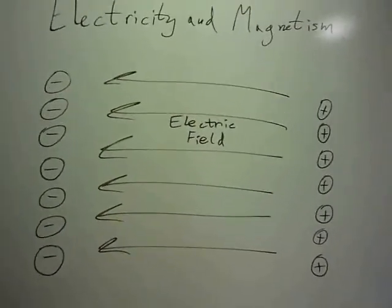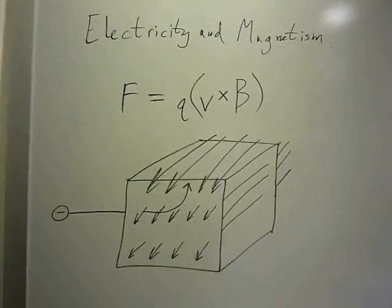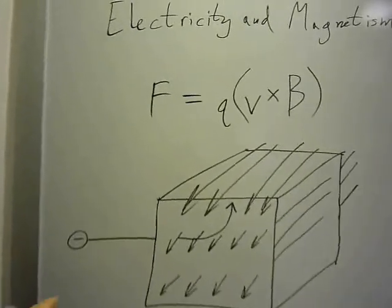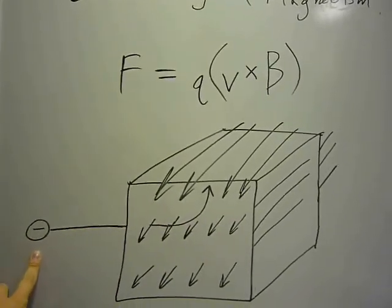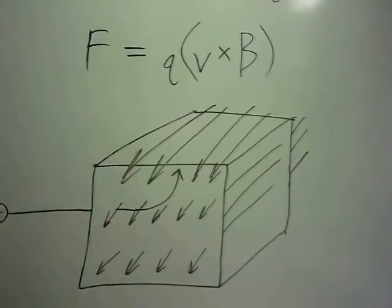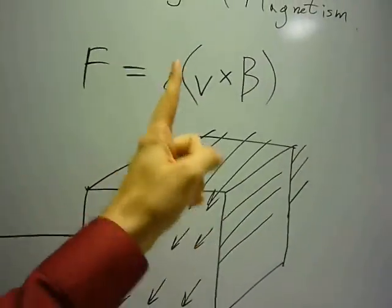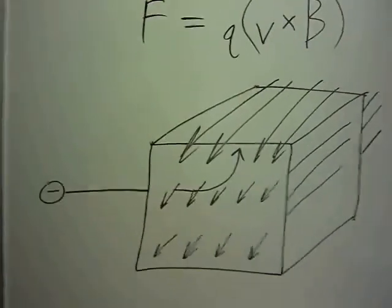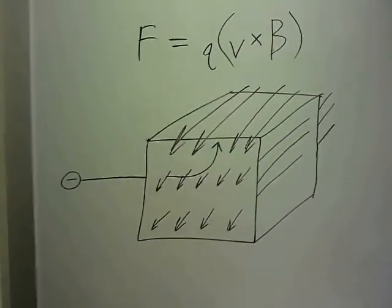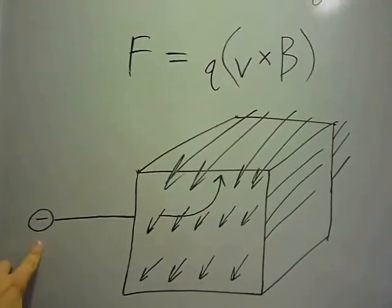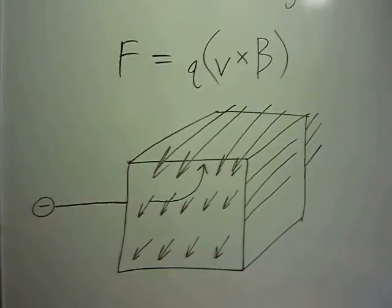Okay for magnetism we have this formula for the force on a particle, a negatively charged particle, in a magnetic field acting in this direction. It's going to curve due to that magnetic field if it travels at a velocity. So essentially magnetic fields only affect particles that are charged electrically when they're moving.